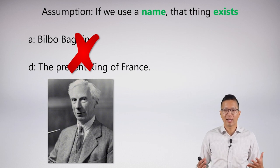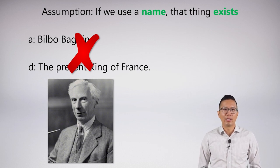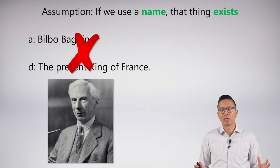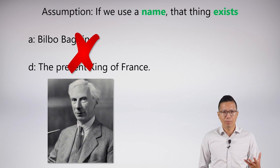Bilbo Baggins isn't actually a real thing, and there is no present king of France. You might recognize this last example as being famous from Bertrand Russell. We're not going to talk too much about the history of this problem. We're just going to remember that we can safely assume that a named thing exists.